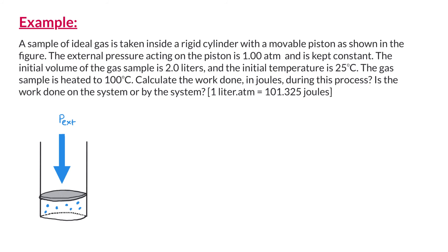Let us now do an example problem. A sample of ideal gas is inside a rigid cylinder with a movable piston. The external pressure acting on the piston is 1 atm and is kept constant. The initial volume of the gas is 2 liters and its initial temperature is 25 degrees Celsius. The gas sample is heated to 100 degrees Celsius. Calculate the work done in joules, and state whether work is done on or by the system. It is given that 1 liter·atm equals 101.325 joules.